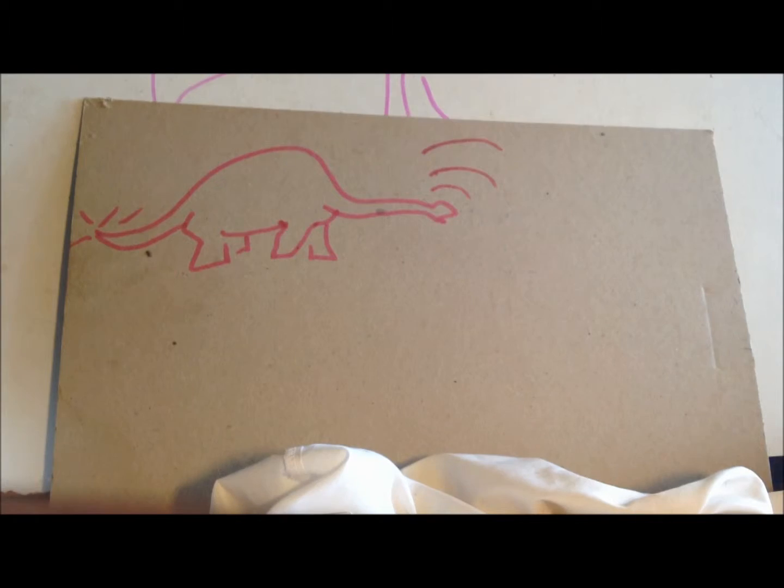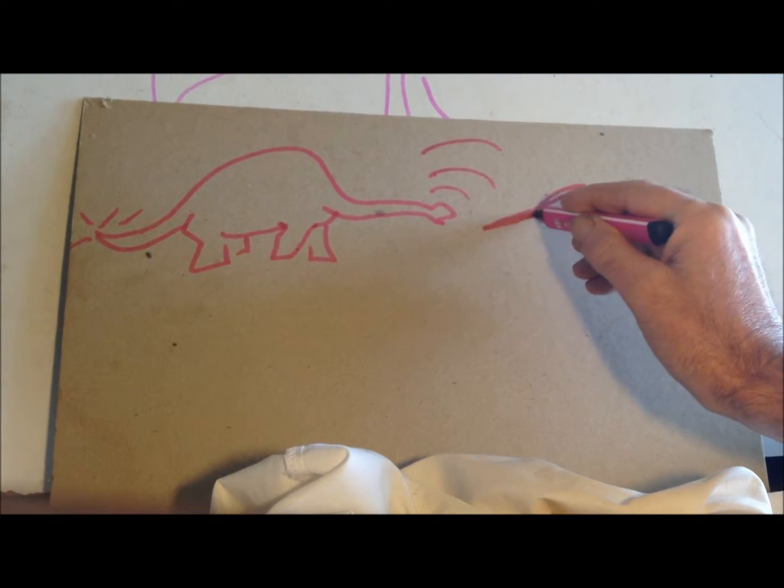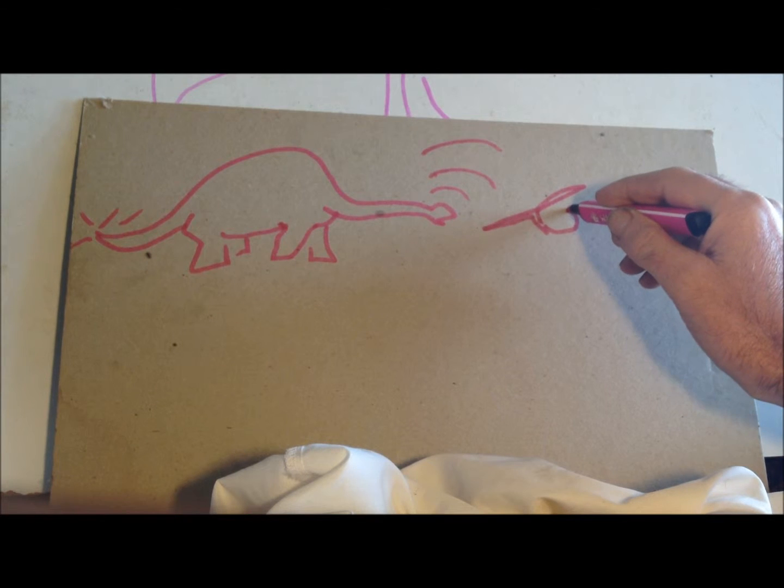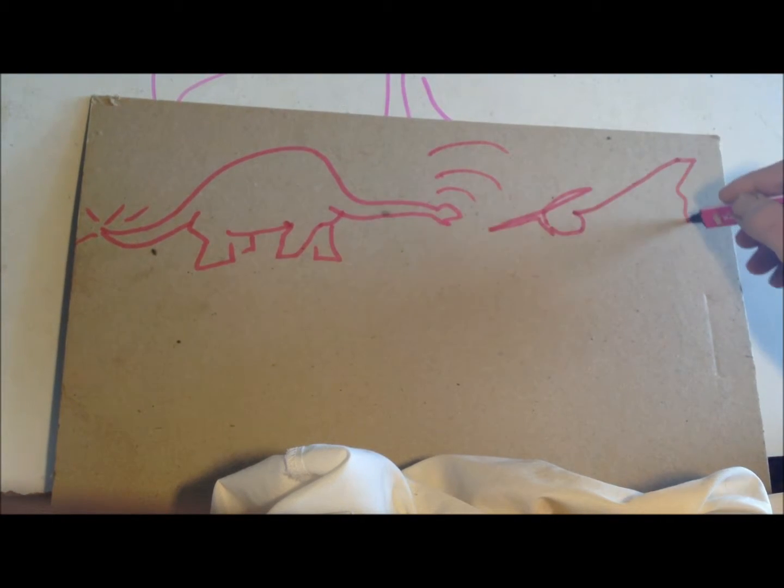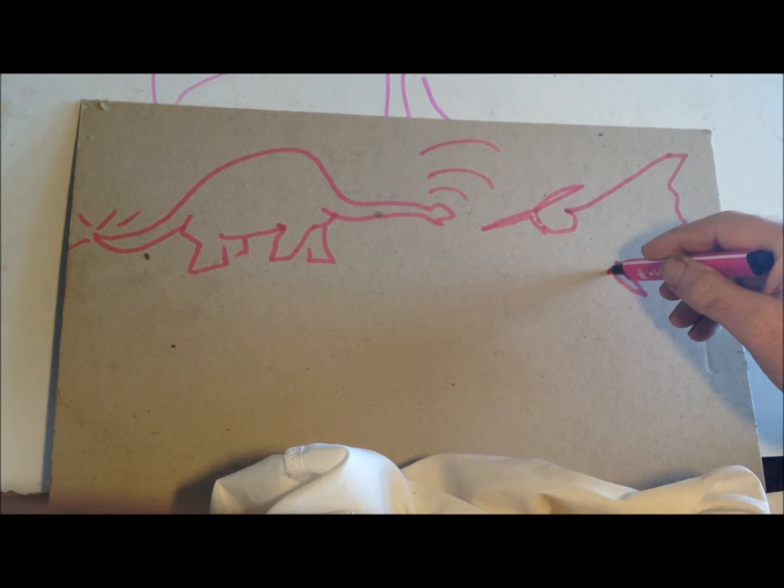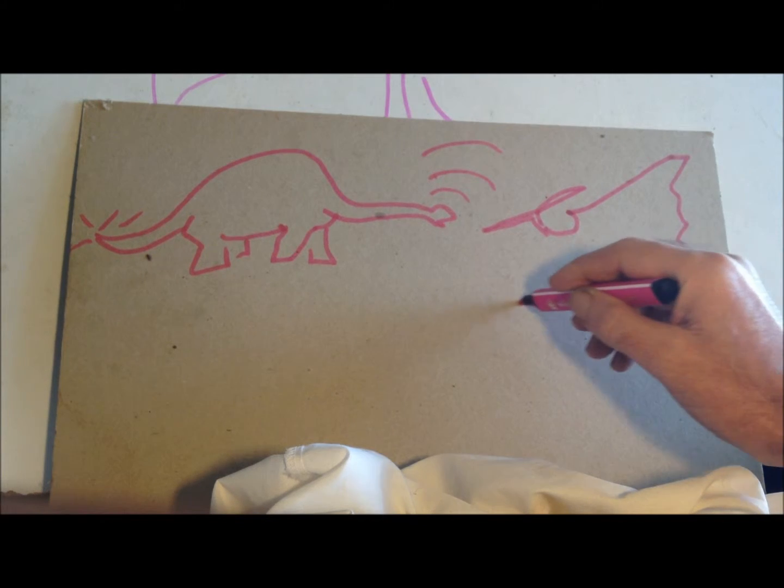But it doesn't matter, because there were some dinosaurs that used to actually fly around. Like that. I think. Let me see if I can get it right. And they had these big claws. I'll do the claws in a minute.